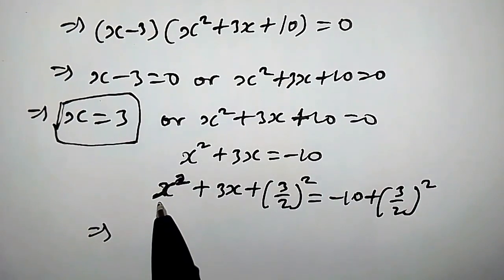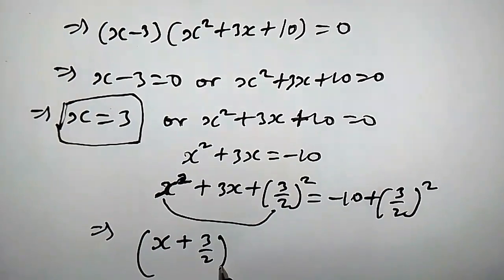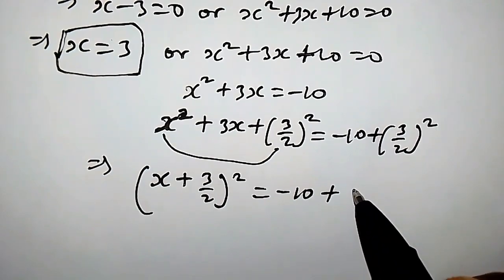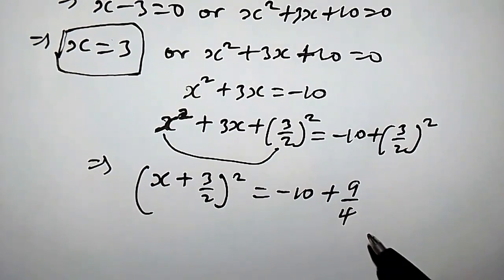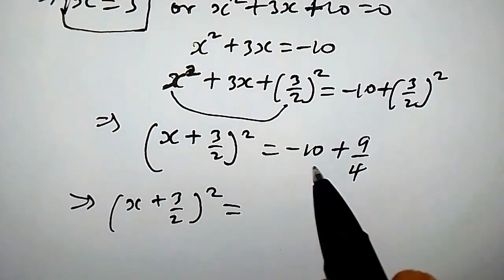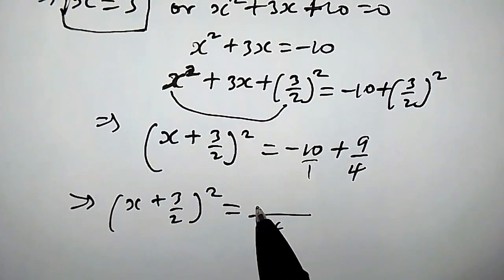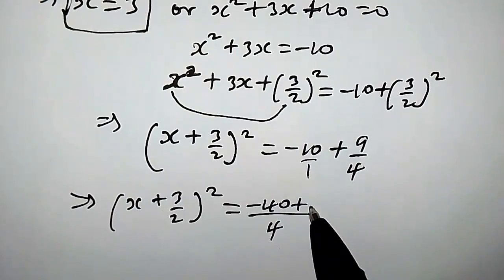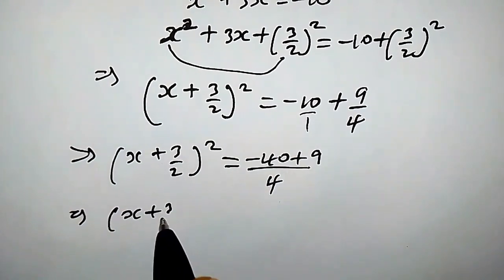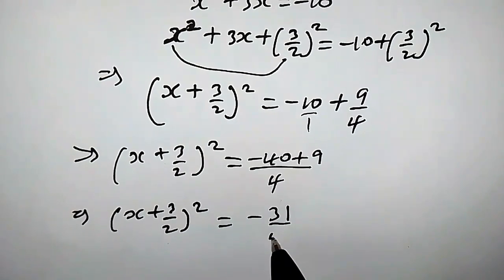So we have x squared plus 3x plus (3 over 2) squared equals negative 10 plus (3 over 2) squared. We can combine the left side to get x plus 3 over 2, all squared, equals negative 10 plus 9 over 4. Using LCM of 4, that gives us negative 40 over 4 plus 9 over 4, so x plus 3 over 2, all squared, equals negative 31 over 4.